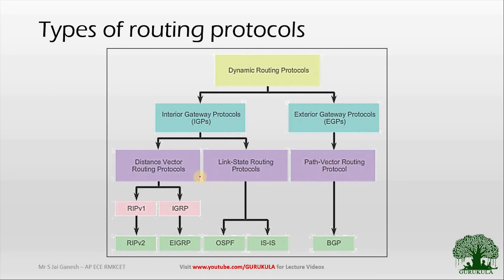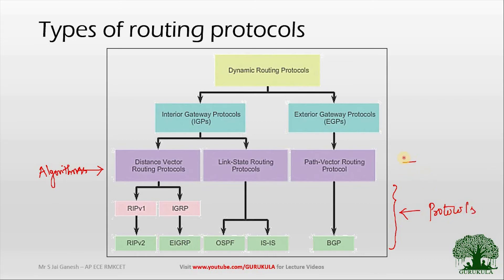The violet color band in the classification diagram represents the algorithms — these are the routing algorithms. Whatever is mentioned below the algorithm stage we call the protocols. The algorithm tells you what to do and the protocol tells you how to do it. This is what we are going to explore in the subsequent videos in this lecture series.